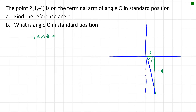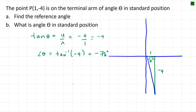The tan ratio is y over x, which is negative 4 over 1, and that's just negative 4. Taking the inverse tan of negative 4, I get an answer of negative 76 degrees rounded to the nearest degree. The negative indicates direction, so the reference angle is actually just 76 degrees, because reference angles are always positive.